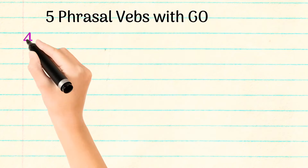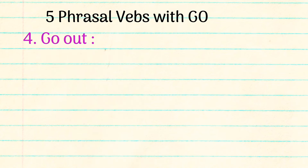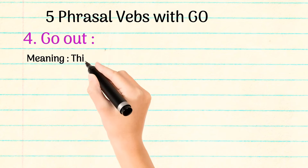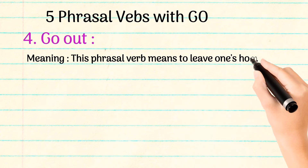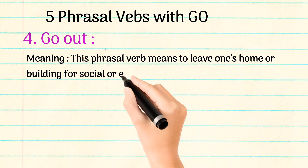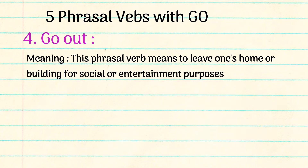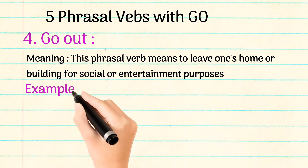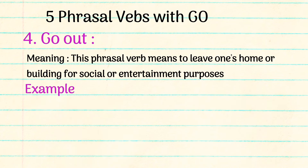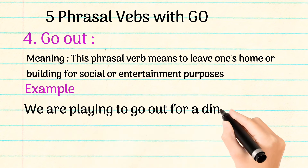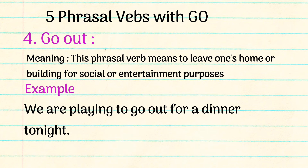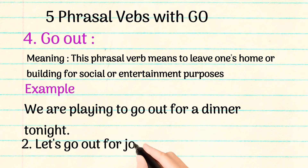The fourth phrasal verb is go out. This phrasal verb means to leave one's home or building for social or entertainment purposes. For example: We are planning to go out for dinner tonight. Let's go out for jogging.